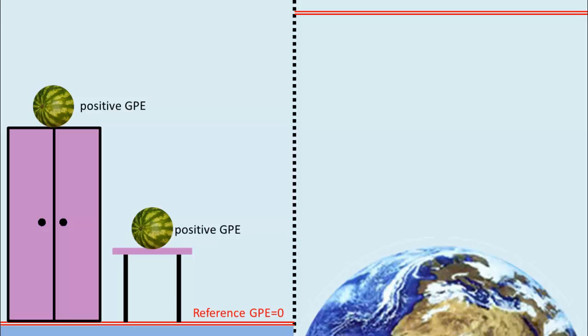When dealing with astronomical objects, we use the furthest point as the reference point, so GPE at infinite separation is zero, and GPE everywhere else is negative.